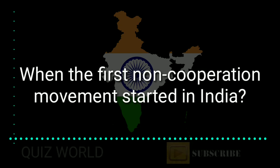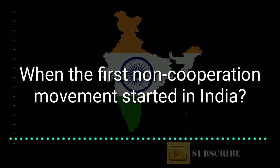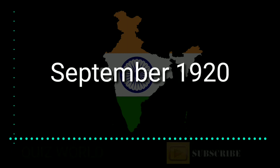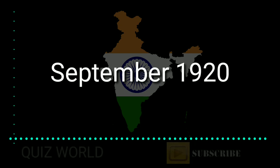When did the first Non-Cooperation Movement start in India? Answer is September 1920.